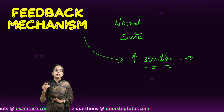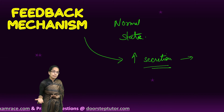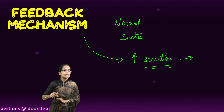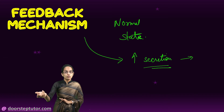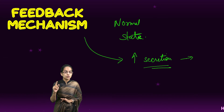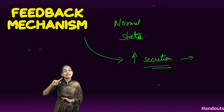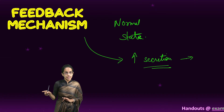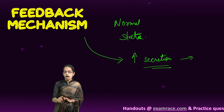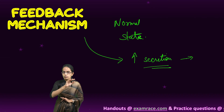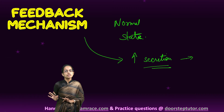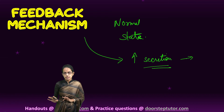But what happens if these secretions continue? If these secretions would continue, there can be over secretion. So there is a negative feedback mechanism that automatically controls that — now there is no more need to release the secretion, we should stop the secretion.